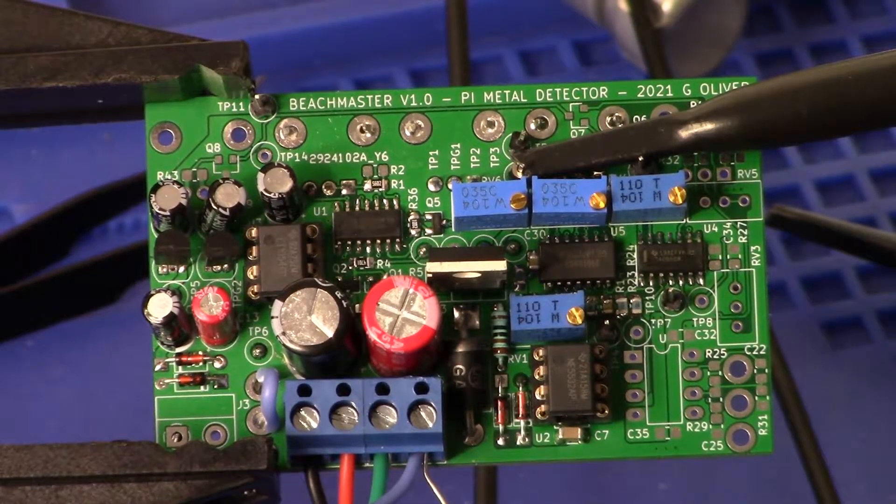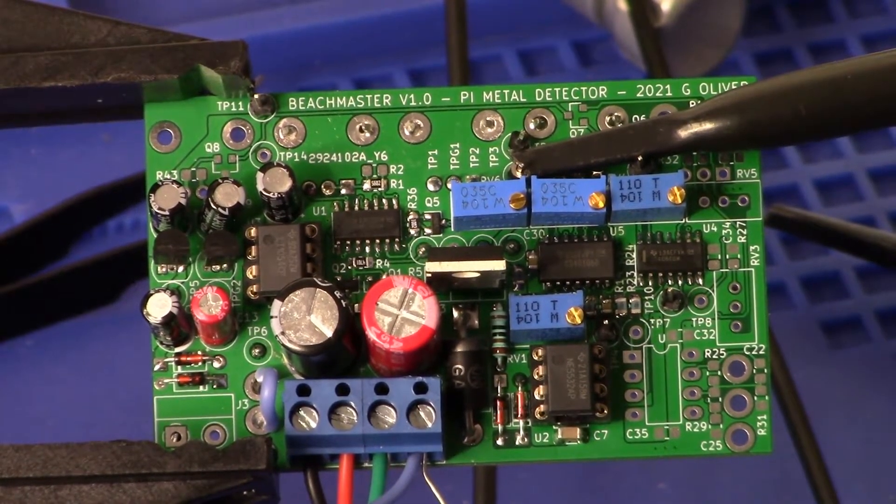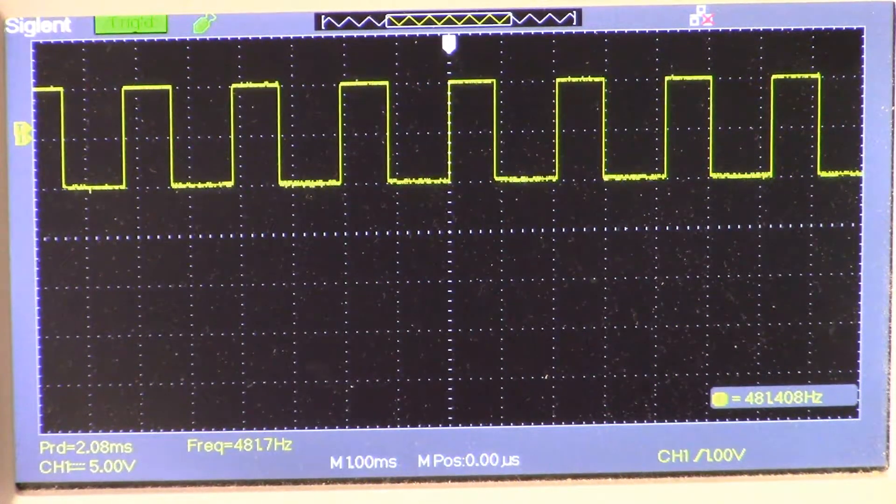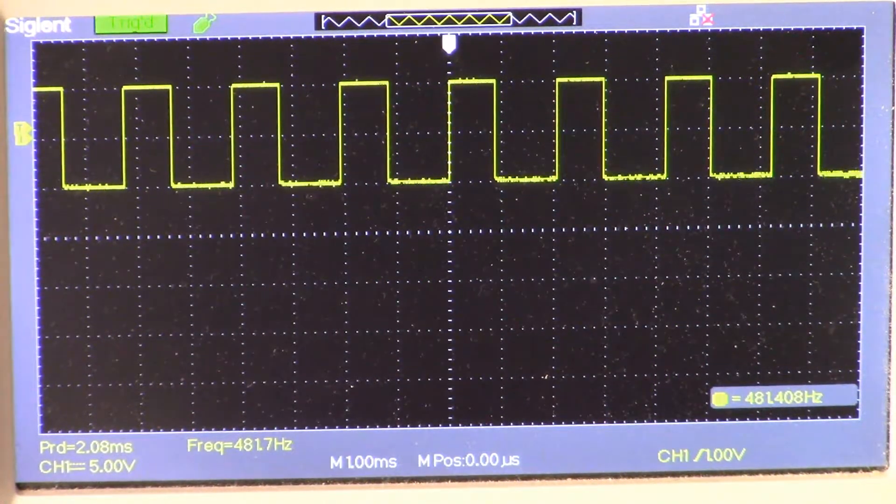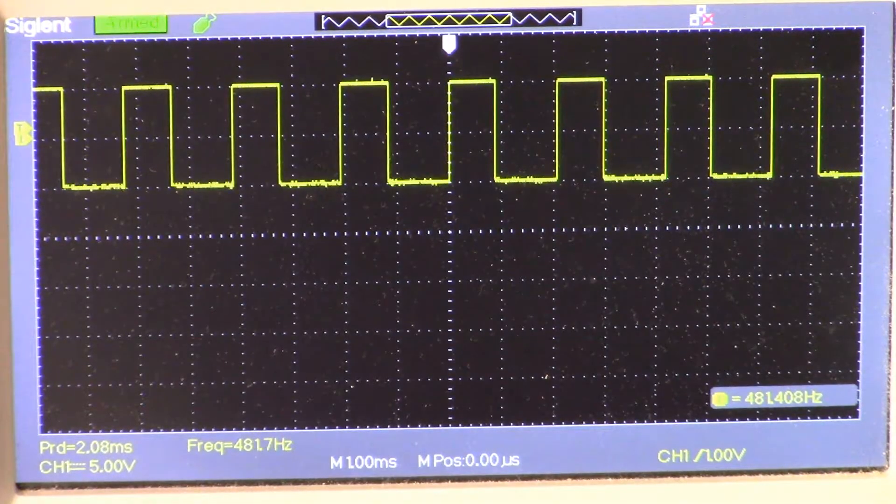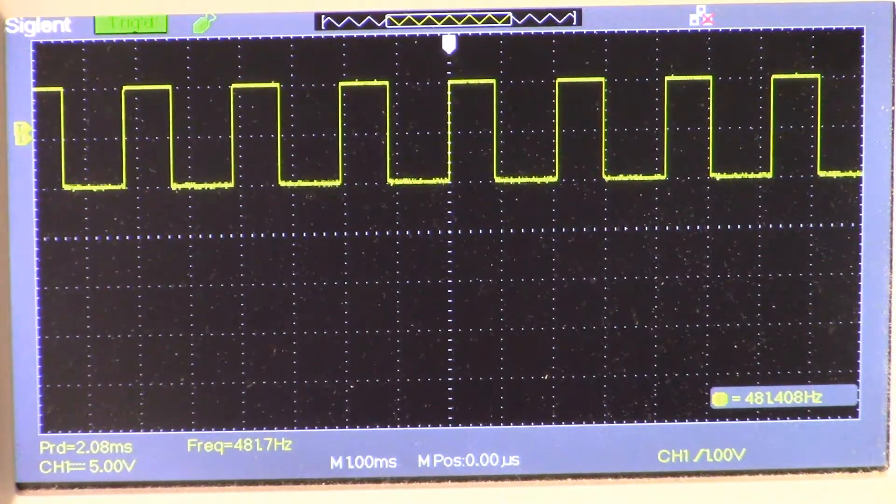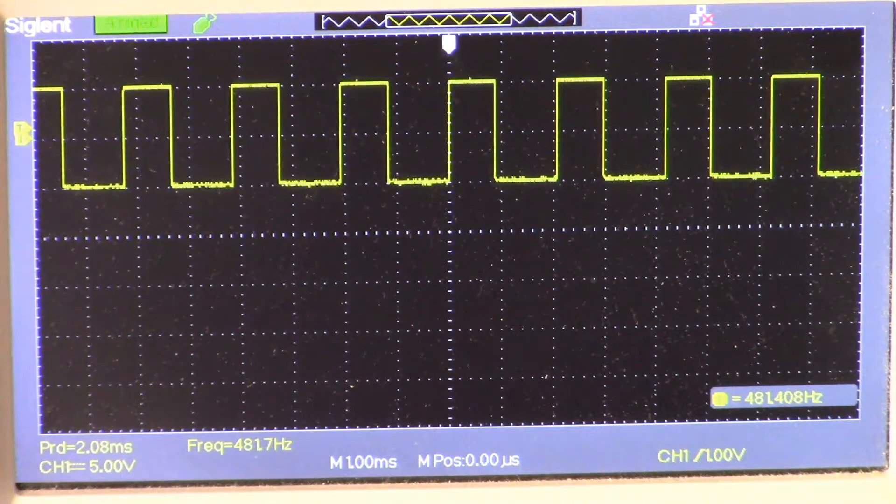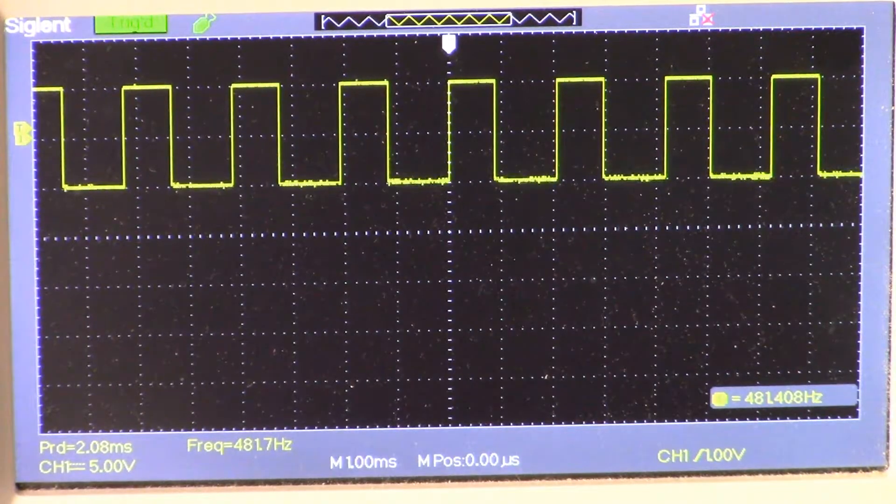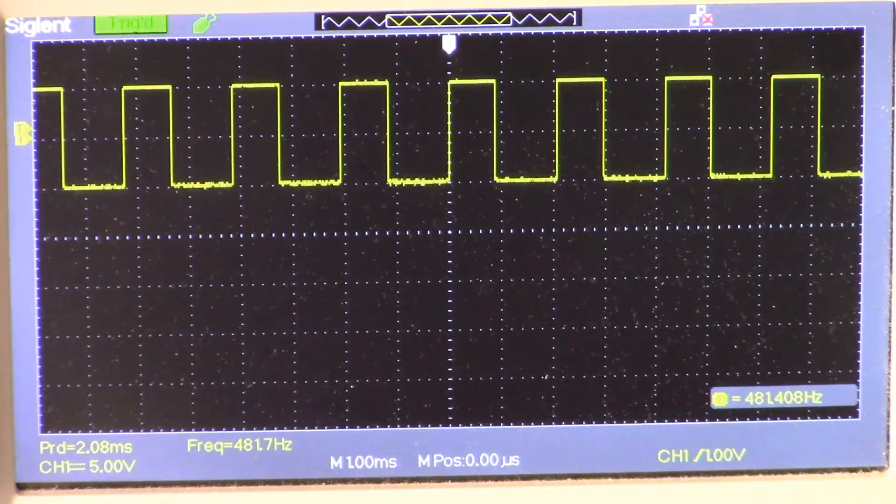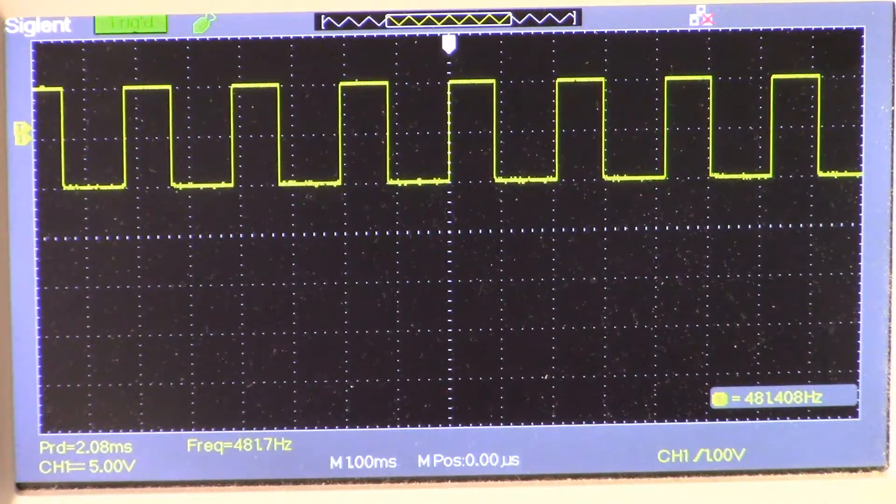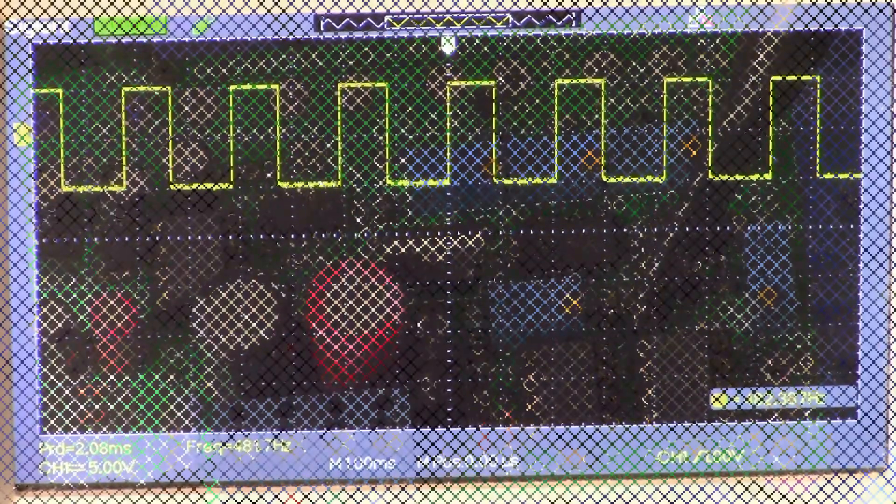All right, there is our audio frequency. I have 481 Hertz and you can adjust that as you see fit, up or down. I don't think it'll go down too much further with that size trim pot, but you can obviously adjust that if you care to.